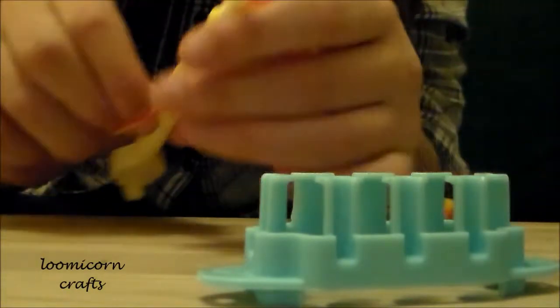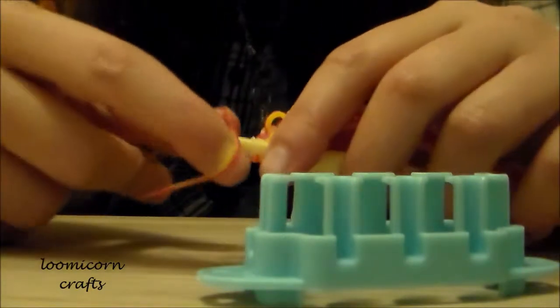So I'm going to use two to match my bracelet, so I'm going to use my red and my yellow. Then just put them there, then you're going to get your hook and you're going to put these two on the end of your hook.